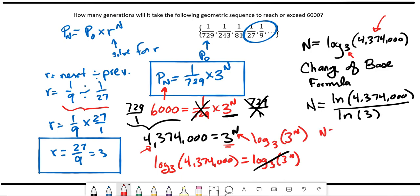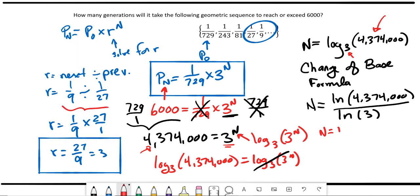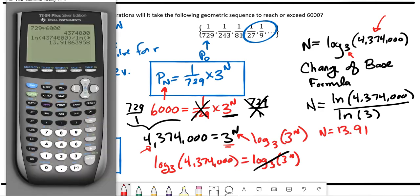So we want to evaluate this now. Now we go to our calculator, ln, 4,374,000, close the parentheses, divided by ln of 3. And when we hit enter, we get that n is equal to 13.91864.